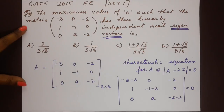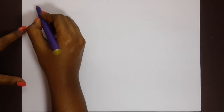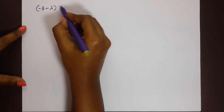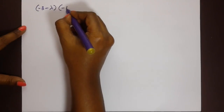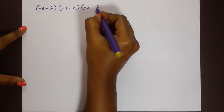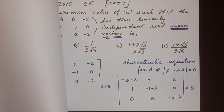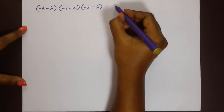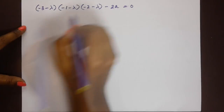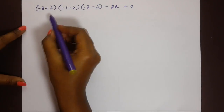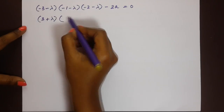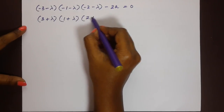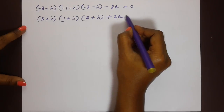Finding the determinant, we obtain: minus three minus lambda multiplied by minus one minus lambda multiplied by A minus two minus lambda, minus two times A minus two, equals zero. Taking the negative signs out, we can write this as three plus lambda, times one plus lambda, times two plus lambda, plus two A equals zero.